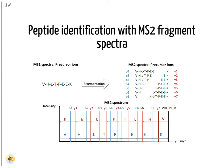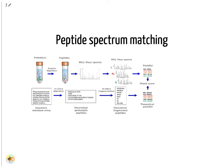The manual interpretation process is automated with so-called de novo sequencing software. These algorithms have improved in recent years and require no information about potential protein sequences in the sample. The default software for peptide identification are so-called search engines. They require information about all protein sequences of the analyzed organism as a FASTA database. From this they generate in silico spectra, which are then matched to the measured mass spectra.